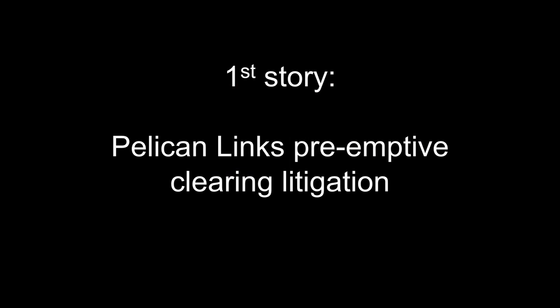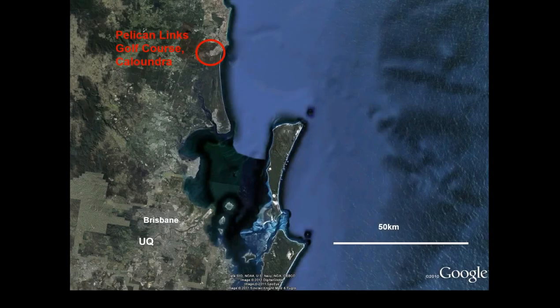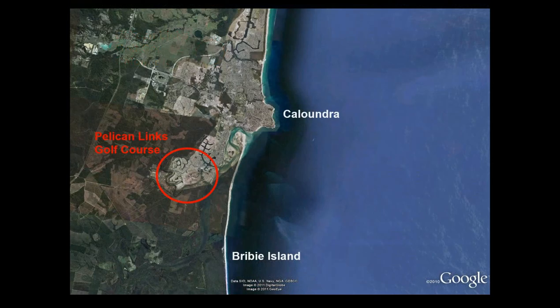Our first story is the Pelican Links preemptive clearing litigation. Pelican Links is a golf course in Caloundra, about an hour's drive north of Brisbane. If you drive into Caloundra, you turn south to Pelican Links, and there's a series of canals that have been built in that area.